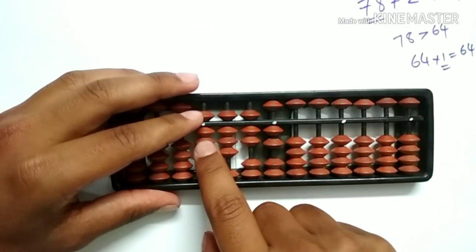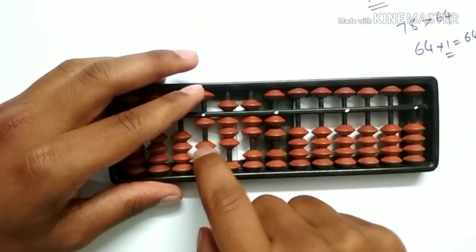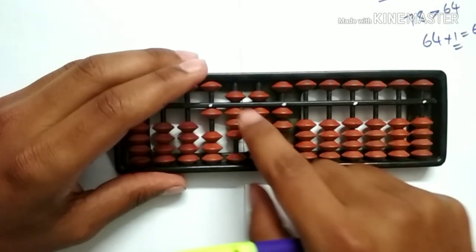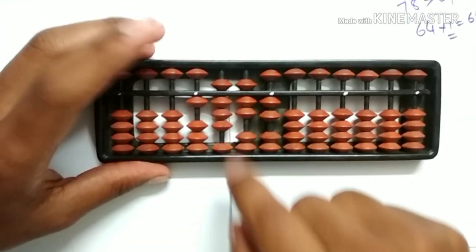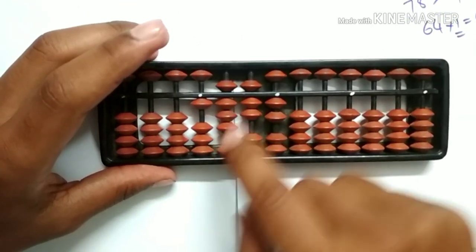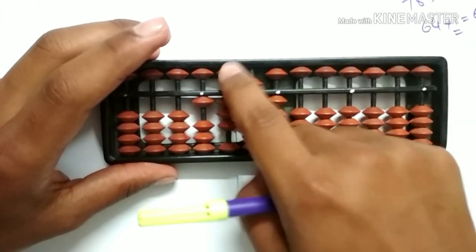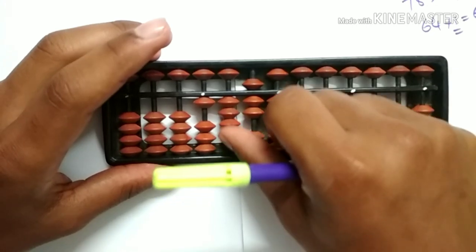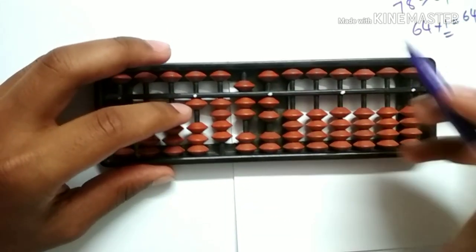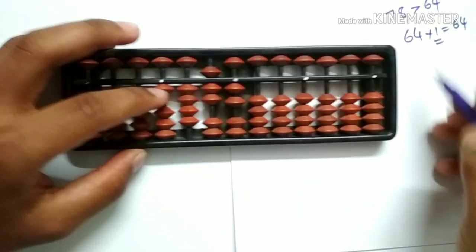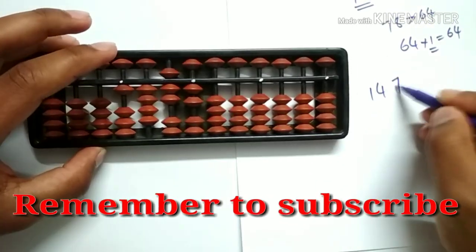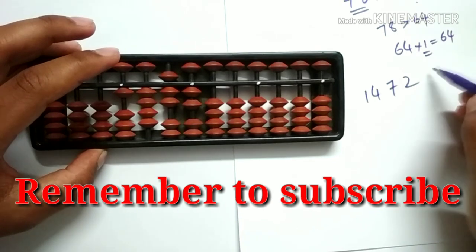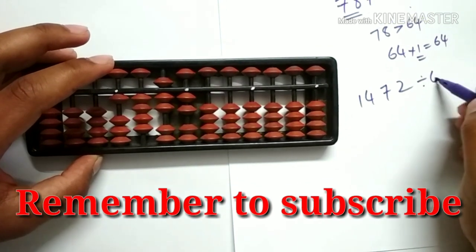Subtract 6 from the 1000th rod, and 4 from the 100th rod. Here it is small friend subtraction — less the friend 5, add the friend 1. Now our modified dividend is 1472 divided by 64.